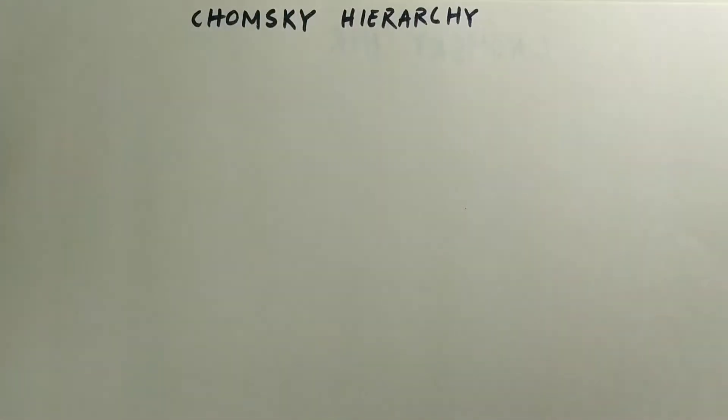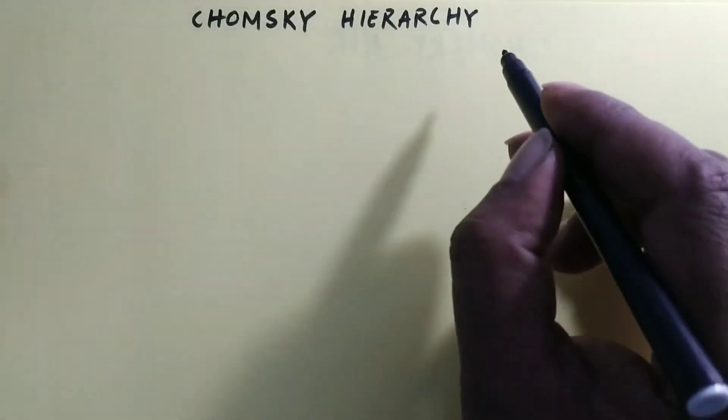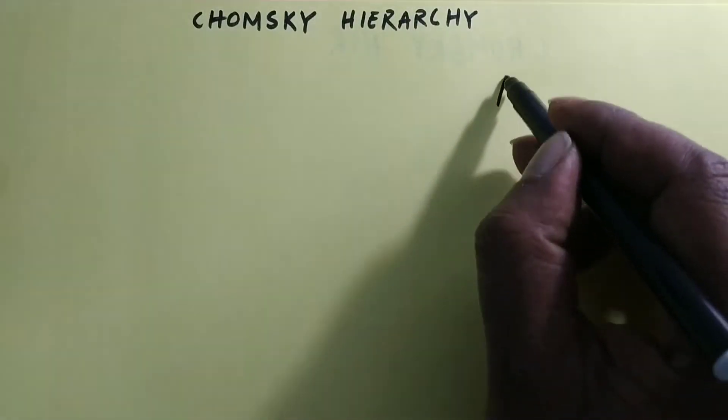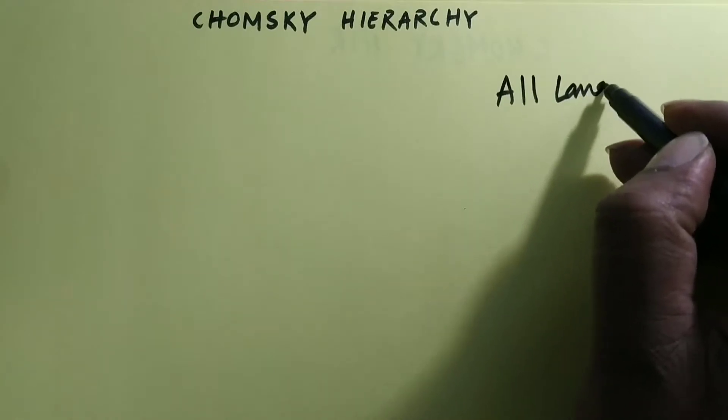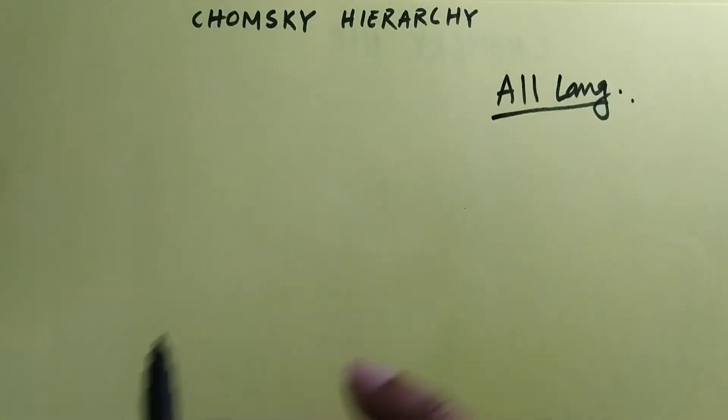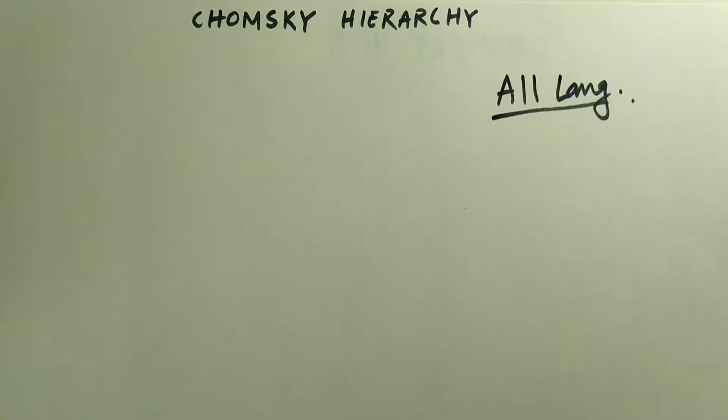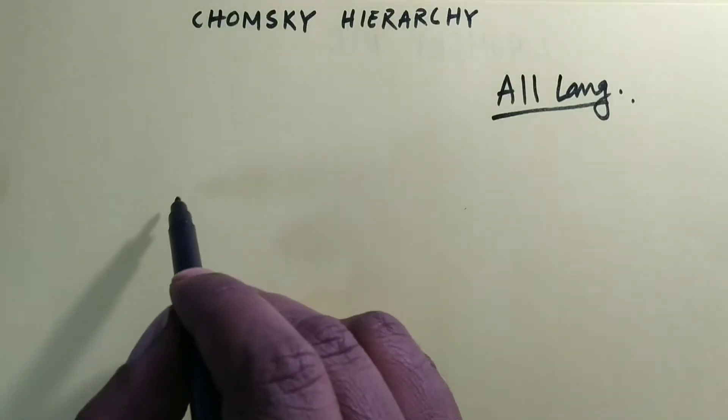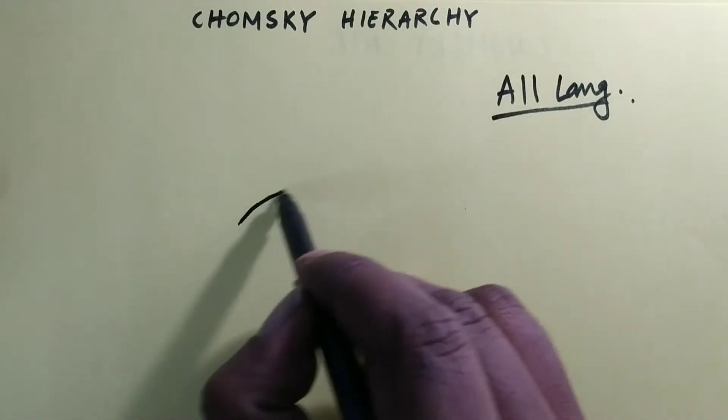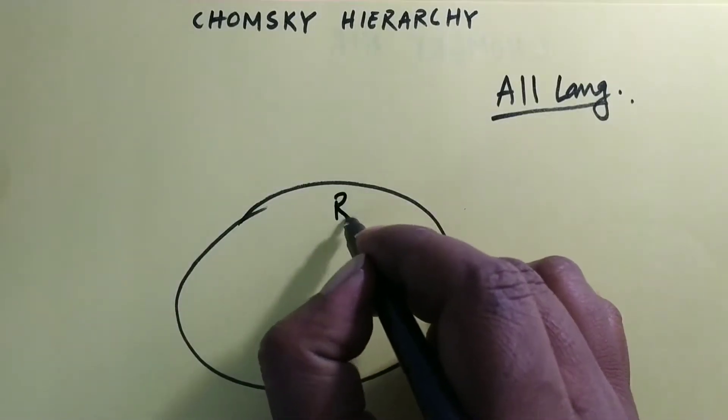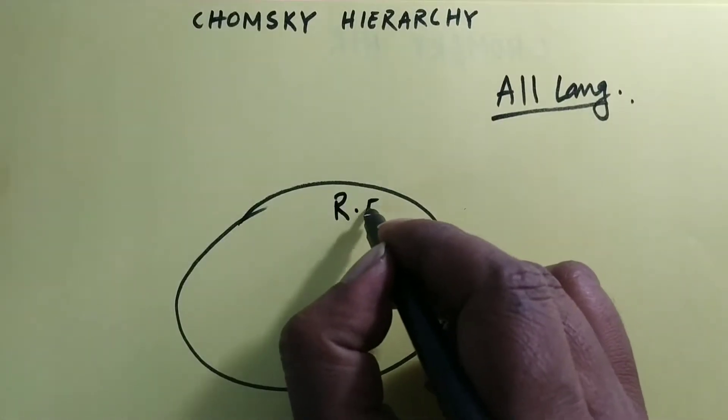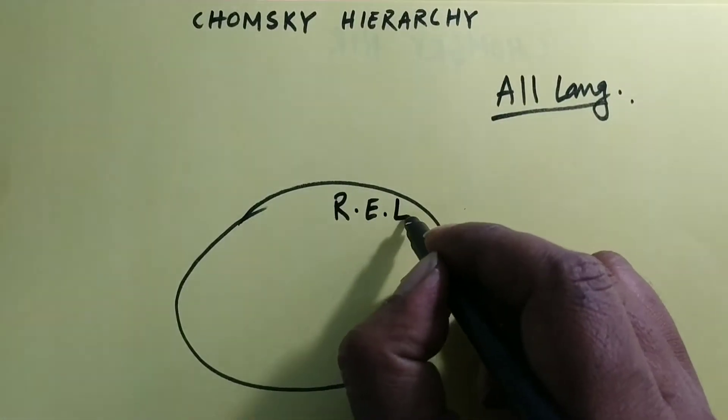So the hierarchy is like this. There is a universe of languages. So that means we will call it like all languages are there. Now out of these all languages, few languages we call as recursively enumerable languages.